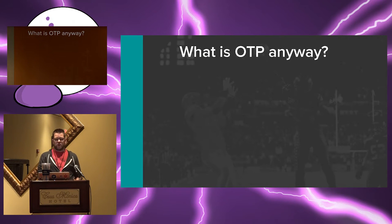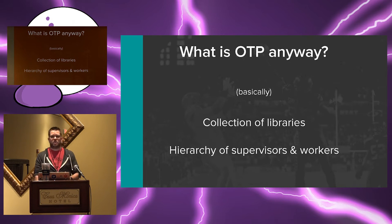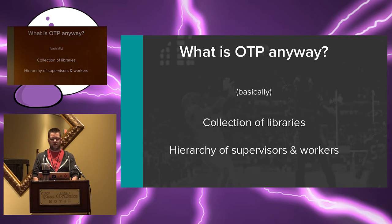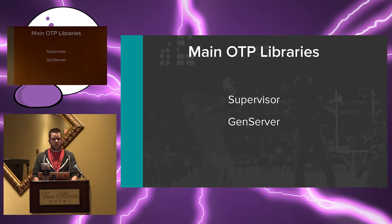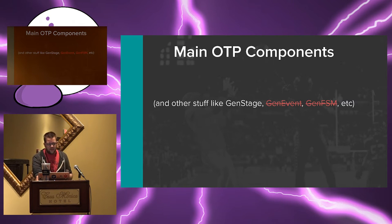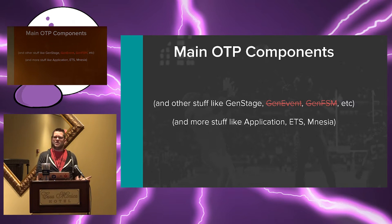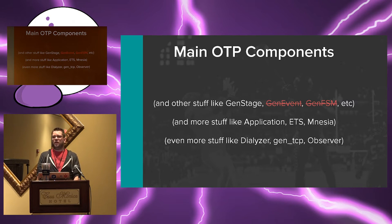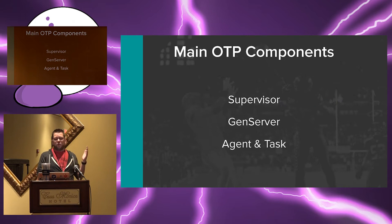So what is OTP anyway? Basically it's a collection of libraries and a hierarchy of supervisors and workers, also called the supervision tree. Of the libraries, the main ones are the Supervisor, GenServer, and then Agent and Task which are abstractions of GenServer. There's also GenStage, and then there's other stuff like Application, ETS, and Mnesia — there's a debate on how to pronounce that — and then Dialyzer, GenTCP, Observer, and that's probably just half the stuff. But the main thing when people say you should learn OTP, they're talking about Supervisor and GenServer for the most part, and also Agent and Task.